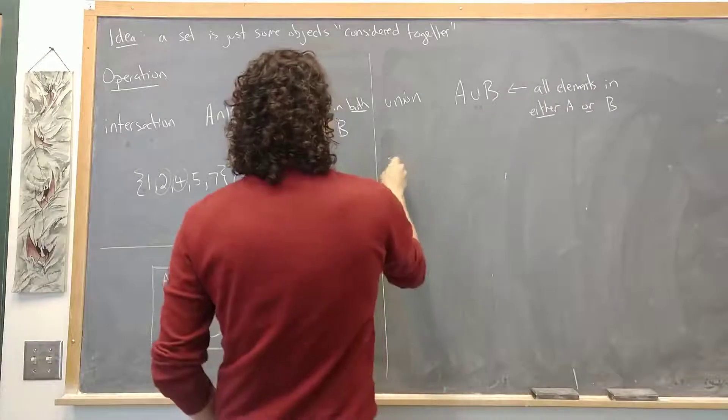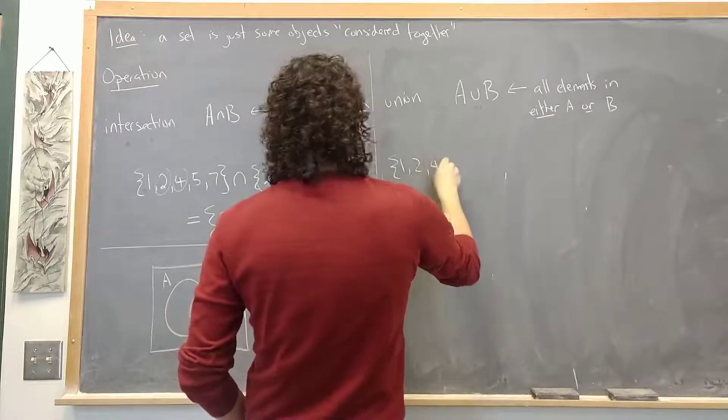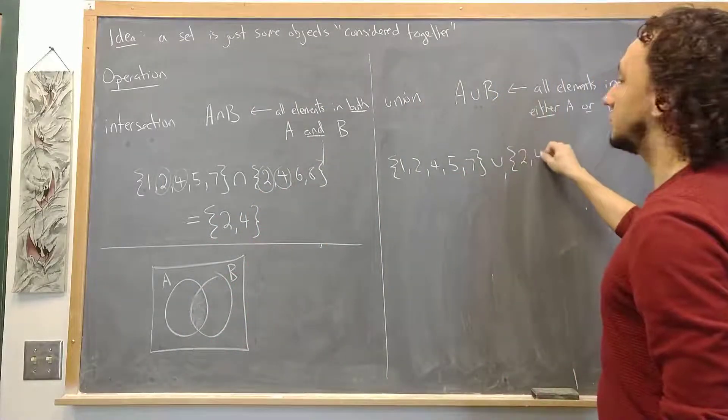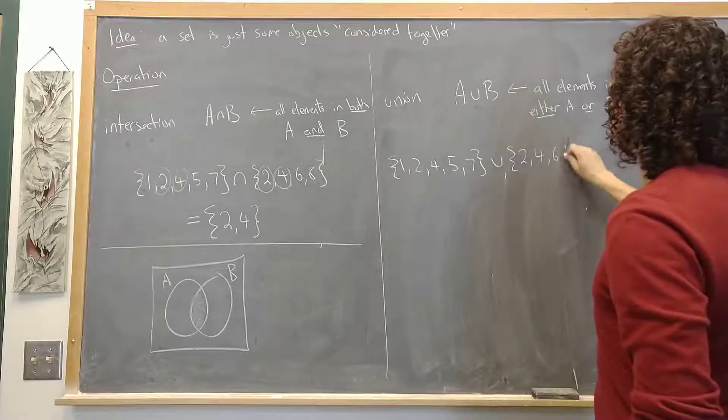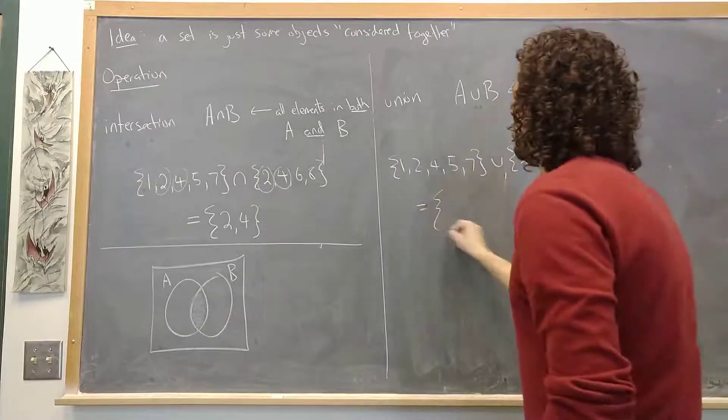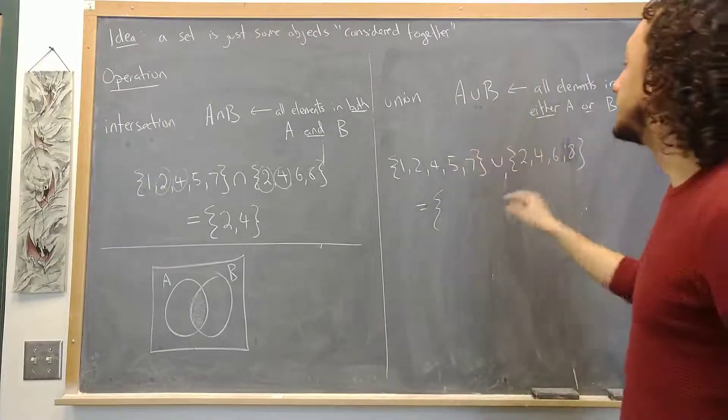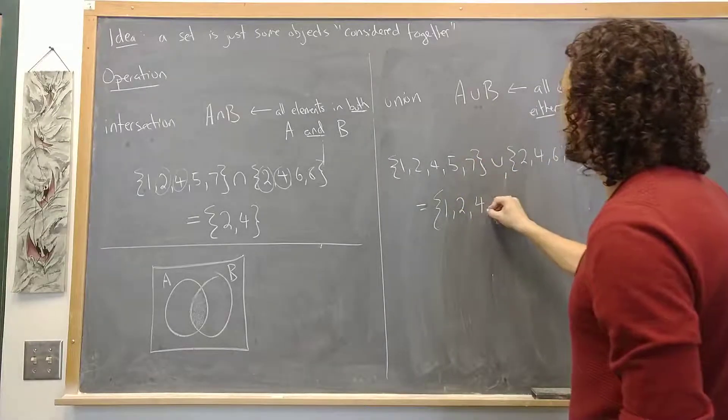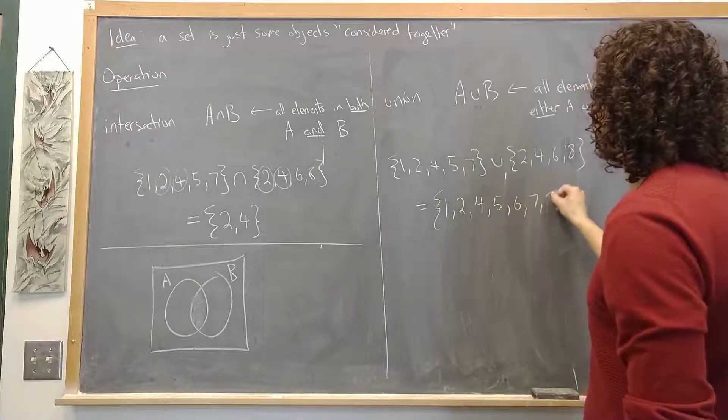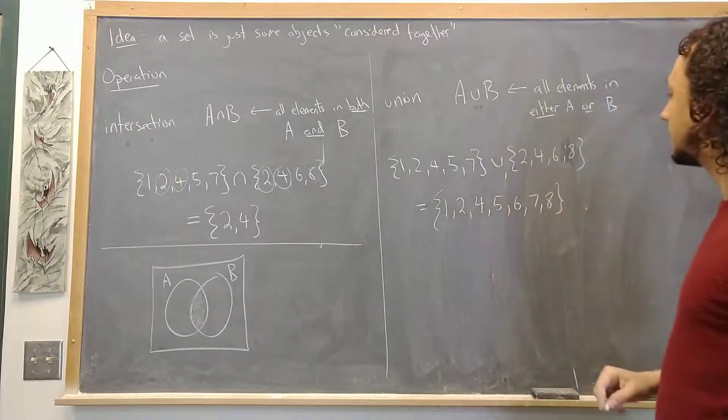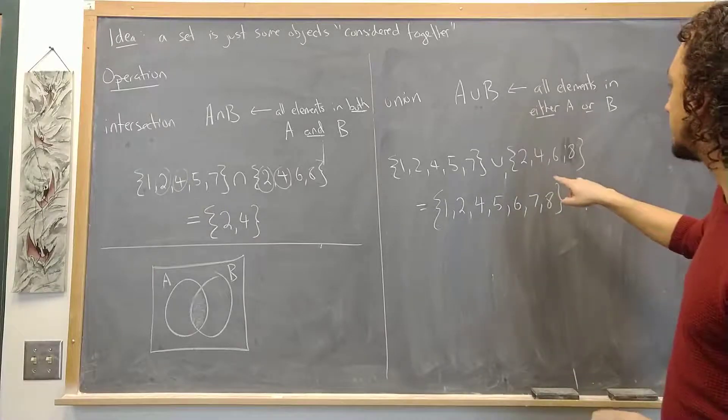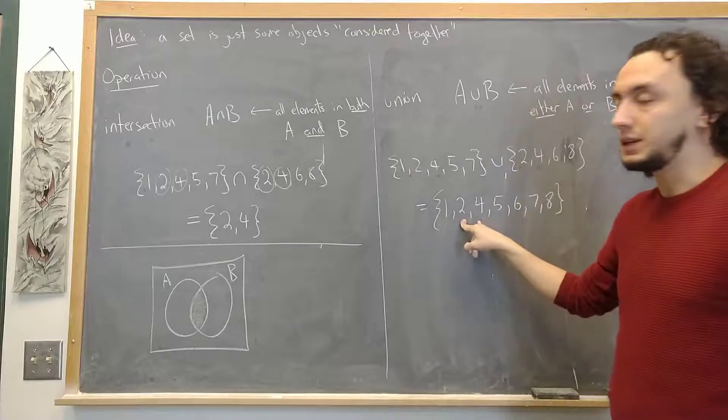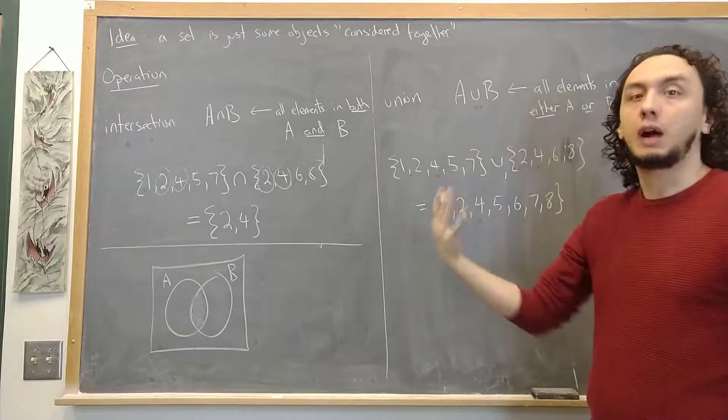So if I go back to the same example: 1, 2, 4, 5, 7, union 2, 4, 6, 8. And what I get is everything that's in either one of these two sets. So I get 1, 2, and I won't get 3 because it's not in either one, 4, 5, 6, 7, 8. And notice that even though some numbers like 4 or 2 occur twice, I only put them once in here because sets don't count multiple copies of the same object.